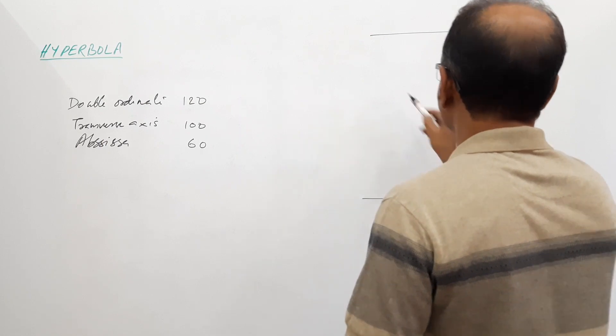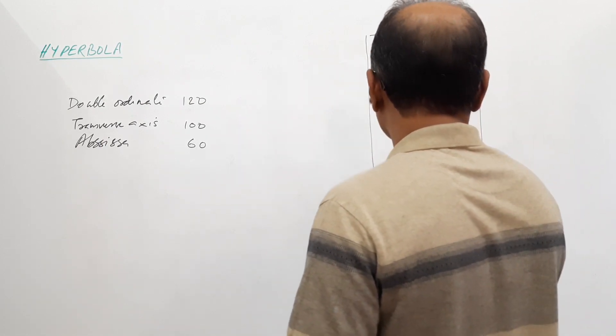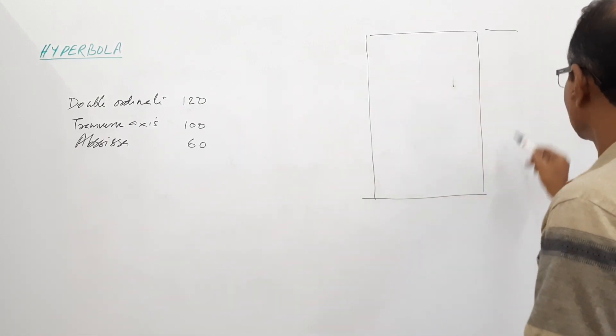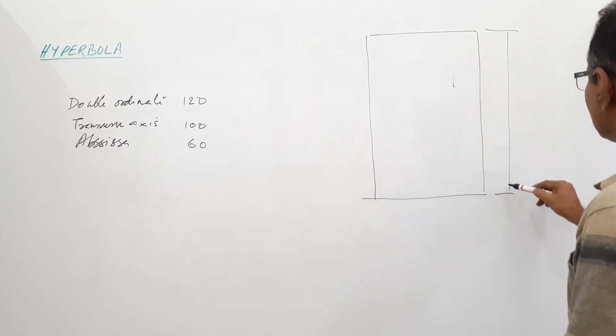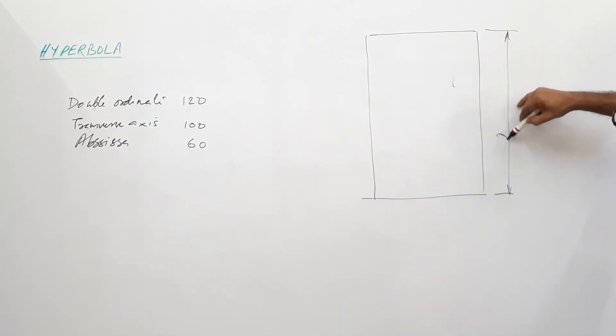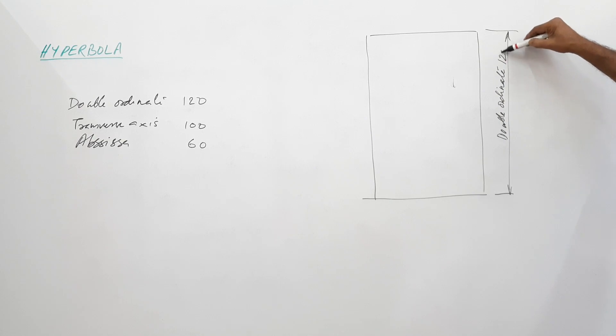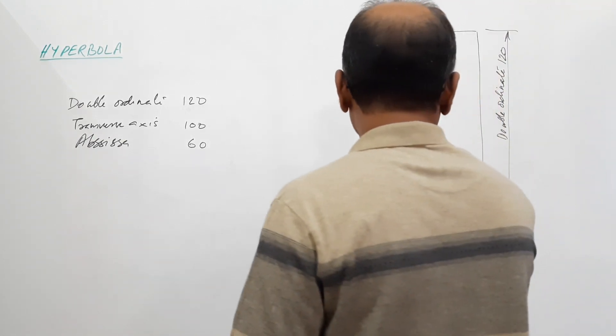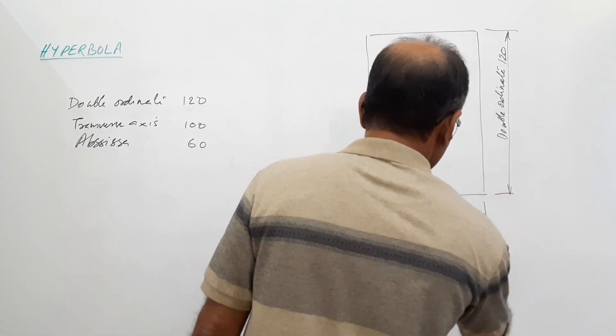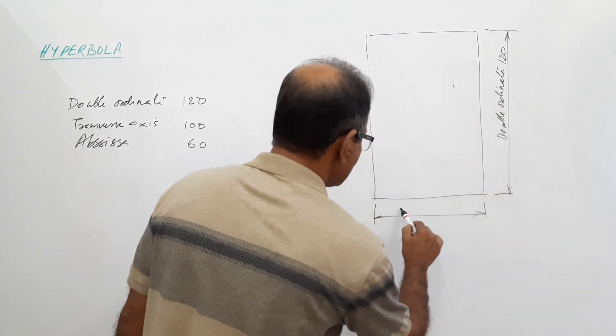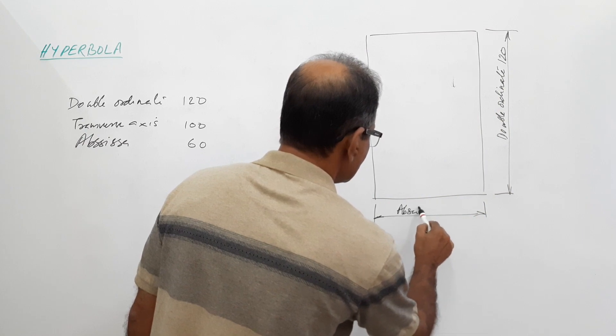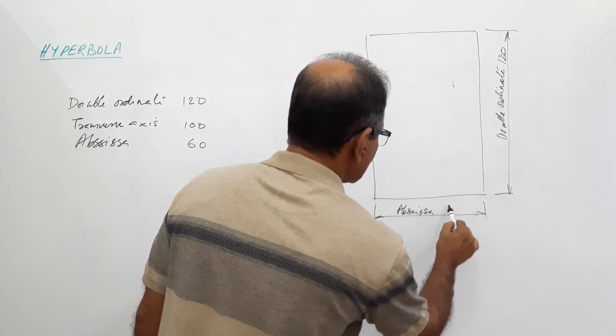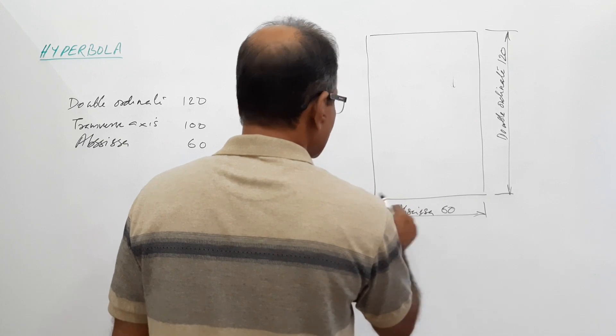This side is the double ordinate, 120. This is abscissa, 60. I call this A, B, C, D.